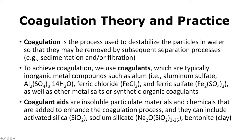Coagulation is the process used to destabilize particles in water so that they may be removed by subsequent separation processes such as sedimentation or filtration. To achieve coagulation, we use chemical coagulants, which are typically inorganic metal compounds. Some examples are alum, ferric chloride, ferric sulfate, as well as other metal salts or synthetic organic coagulants. We may also add coagulant aids — insoluble particulate materials and chemicals that enhance the coagulation process — such as activated silica, sodium silicate, and bentonite clay.